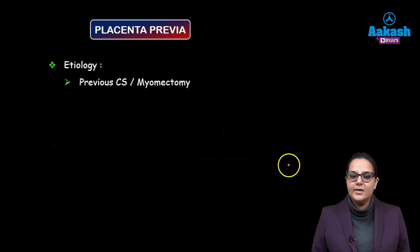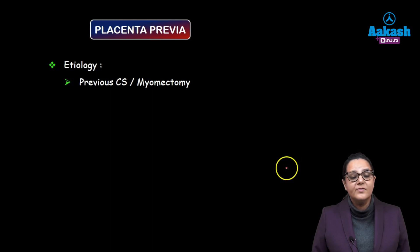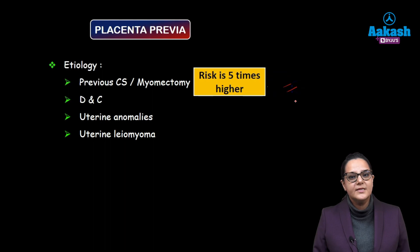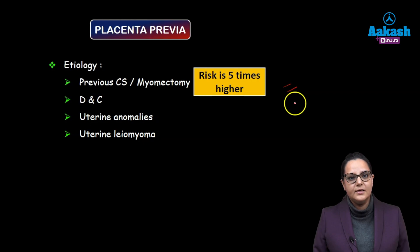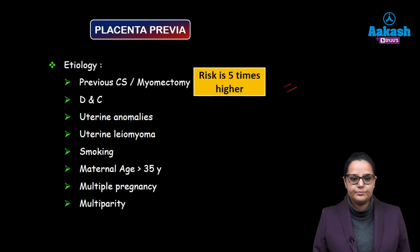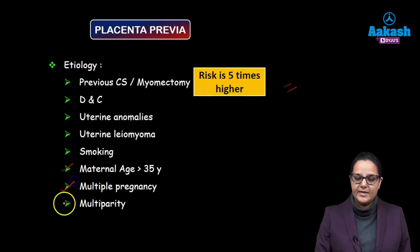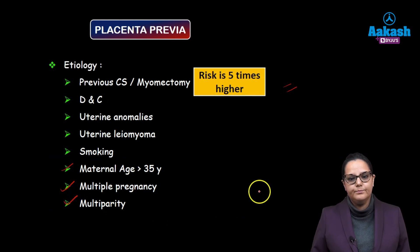Now, what is the etiology? The most common etiology is any previous scar on the uterus — it can be a previous caesarean section or a previous myomectomy, where the risk is five times higher of having a placenta previa. Other causes can be a D&C, any uterine anomaly, or a uterine fibroid which is not letting the placenta migrate upwards. Other causes are smoking and all the M's: maternal age more than 35, multiple pregnancy, and multiparity.